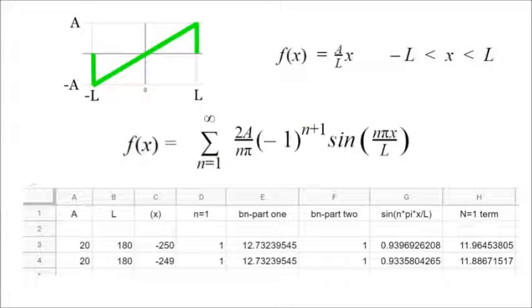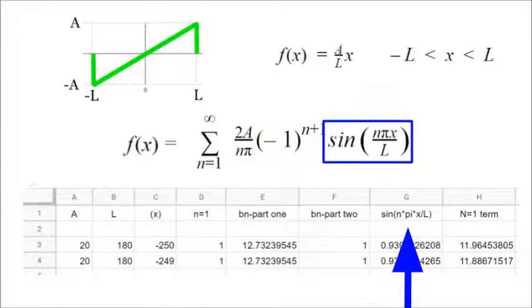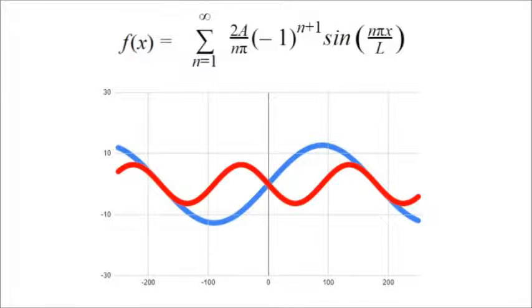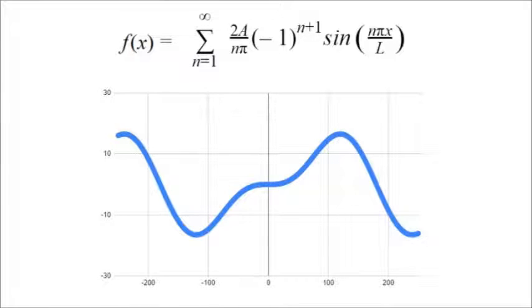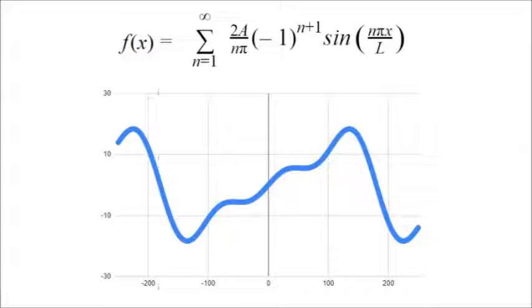A, L, X, all good stuff. B n part 1, B n part 2. Don't forget the sine n pi x over L term. Everything we need from term 1 and term 2, which is technically n equals 3. Together. Plus n equals 5. Together. It's a sawtooth wave.